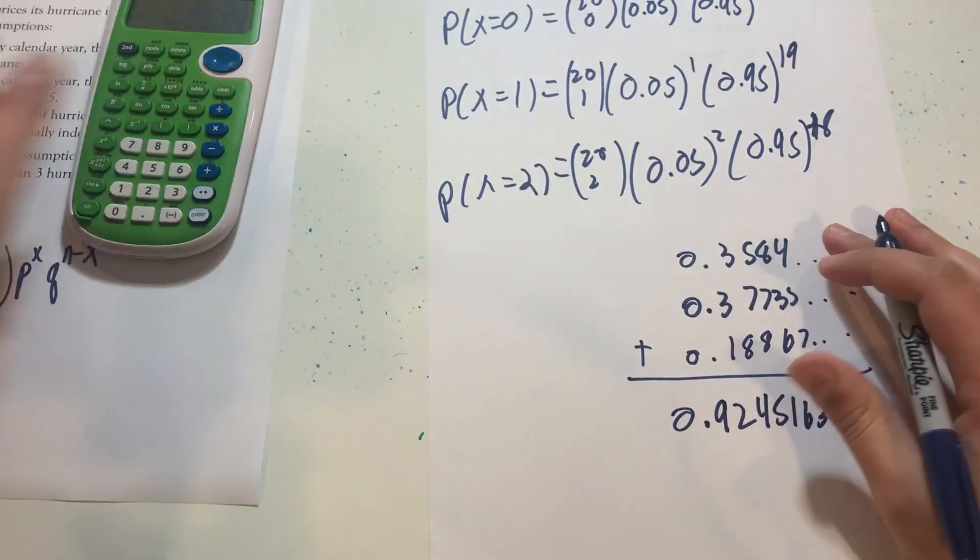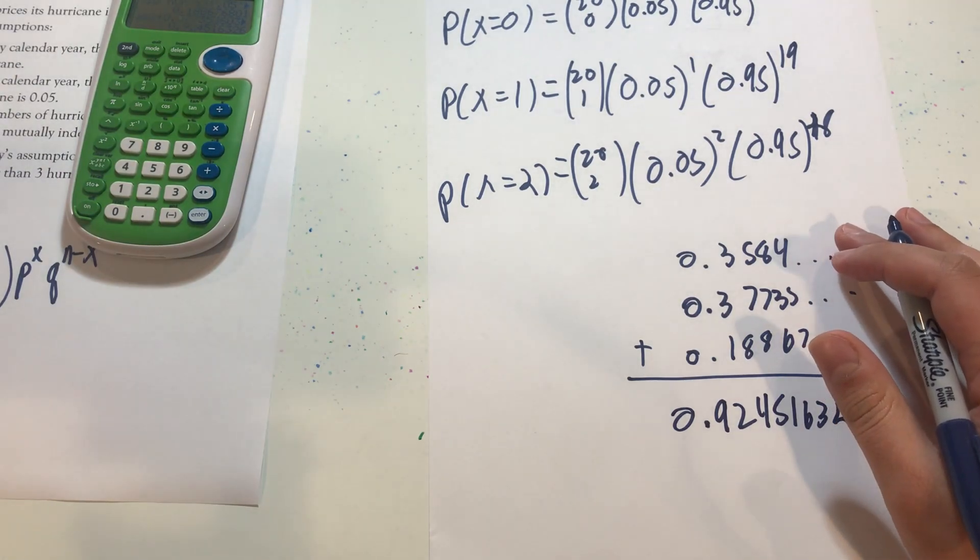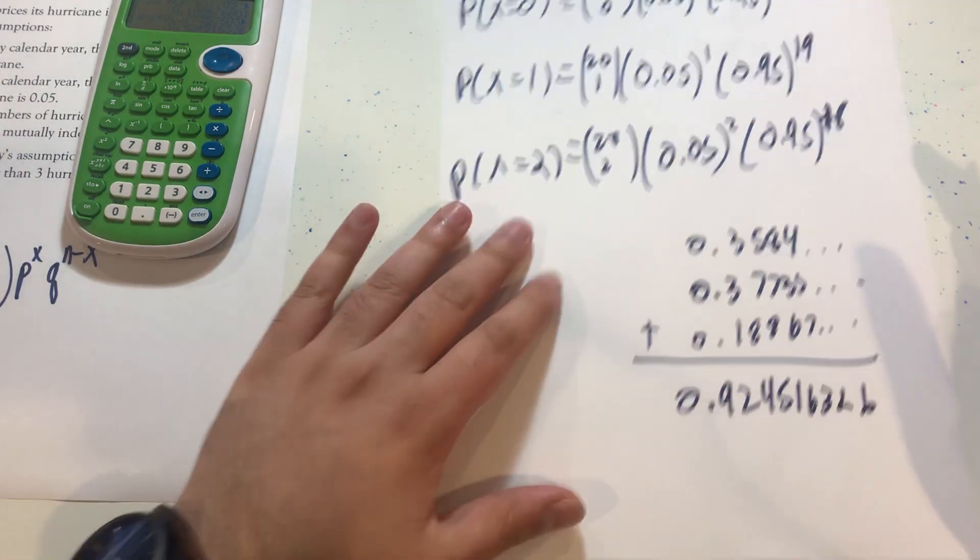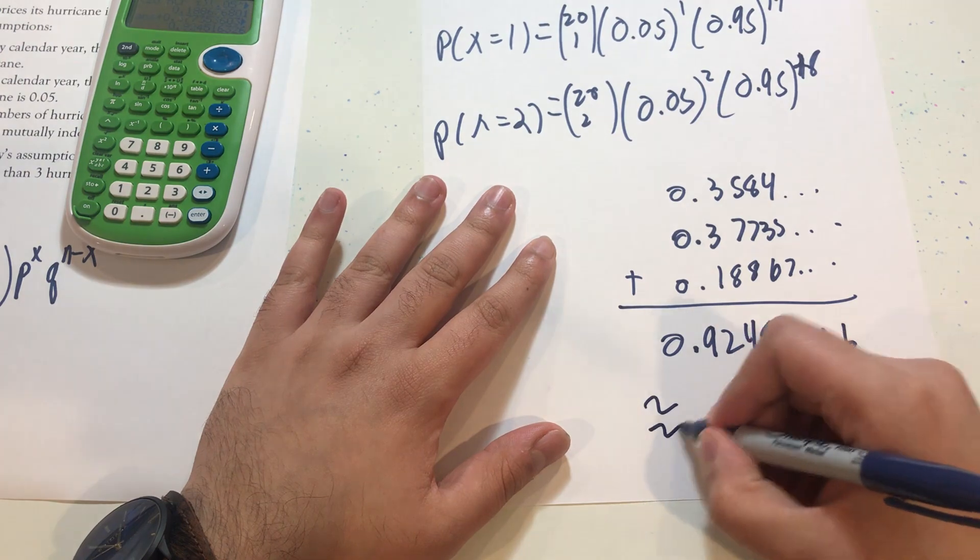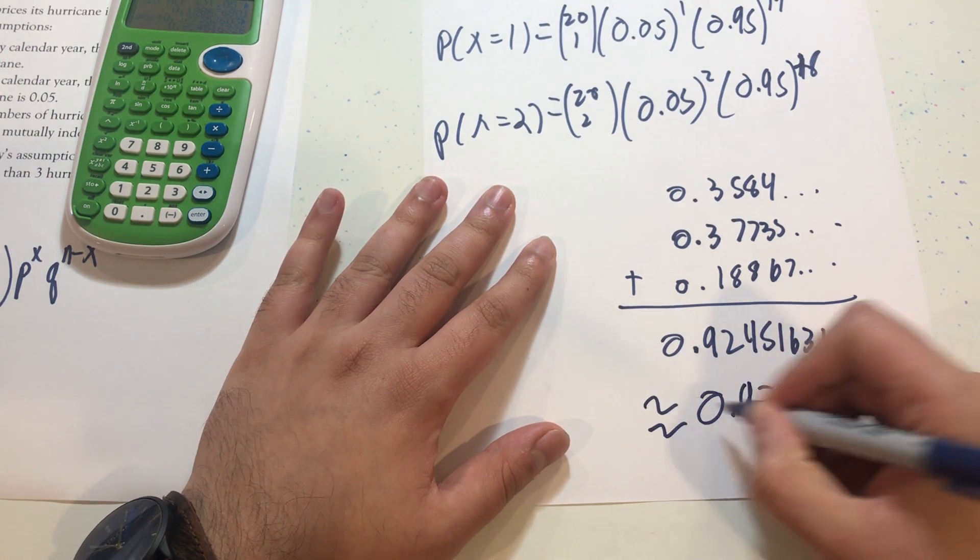And I get a probability of 0.924516326. Now, this question rounds to two decimal places, or not the question, but the answer choices round to two decimal places. So approximately 0.92.